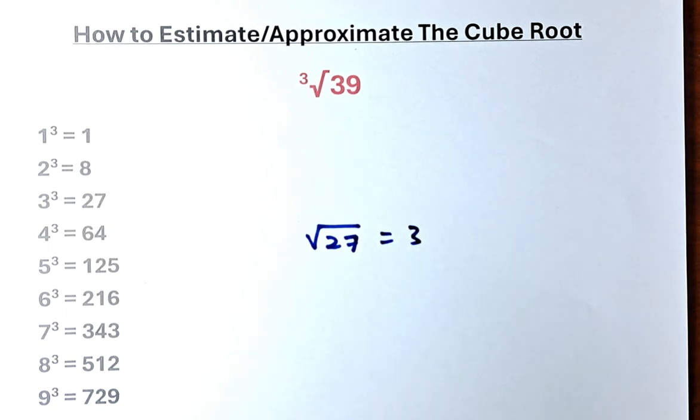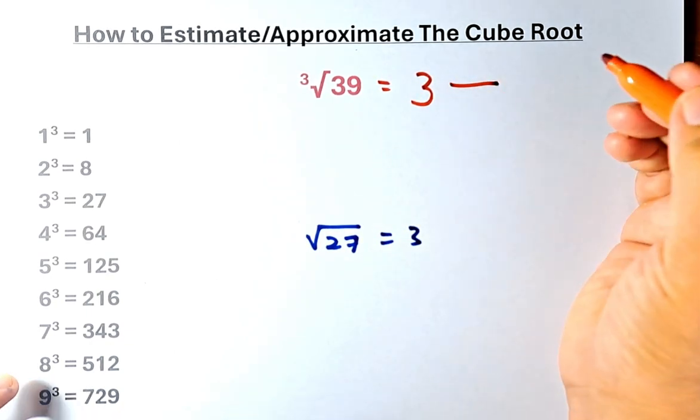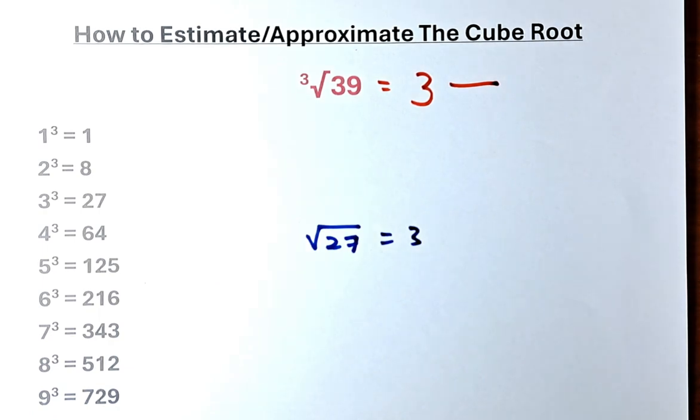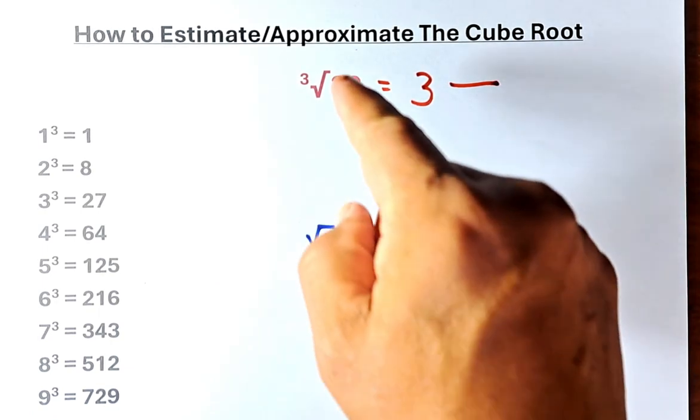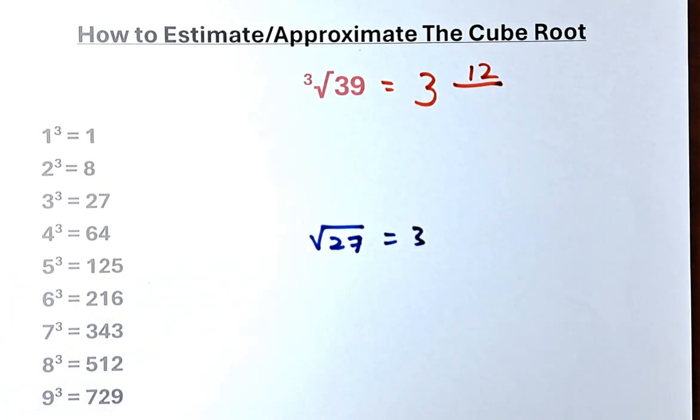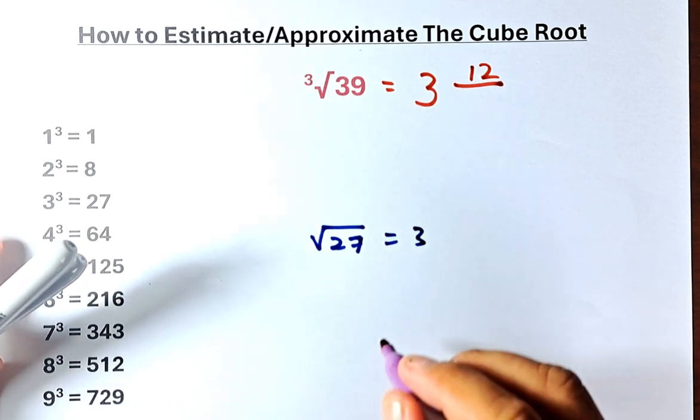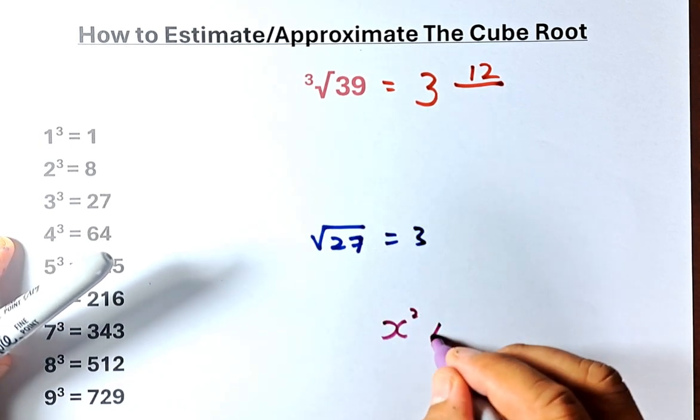So what we're going to do now, we are going to put the answer as 3 and then we're going to put the denominator and numerator. If you remember, the numerator is just 39 minus 27 which is going to be 12 and the denominator has this formula. Hope you remember them. It is x squared times 3.